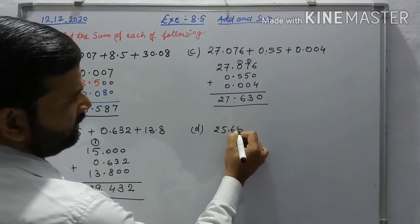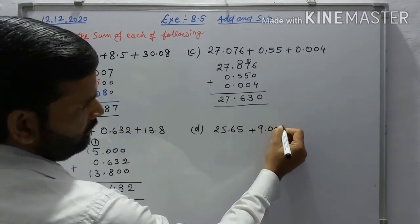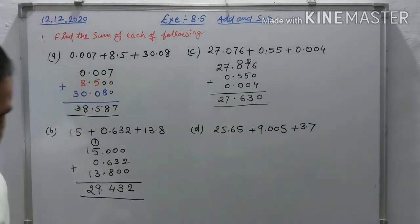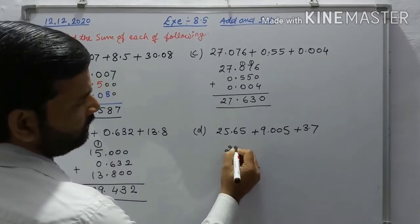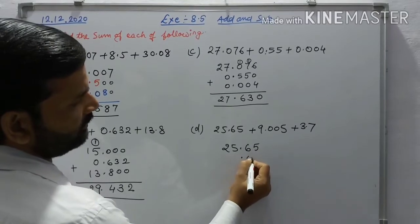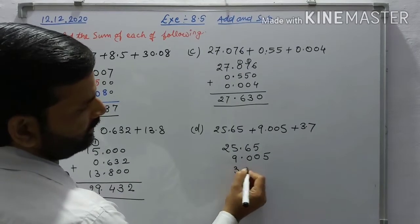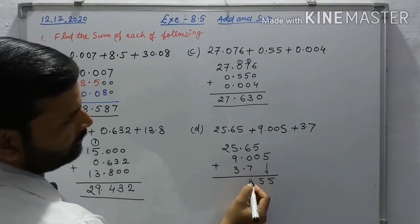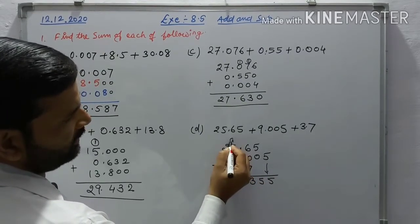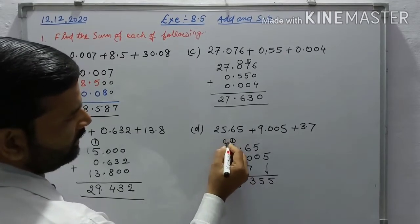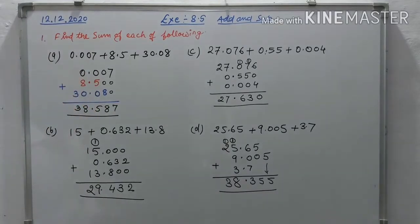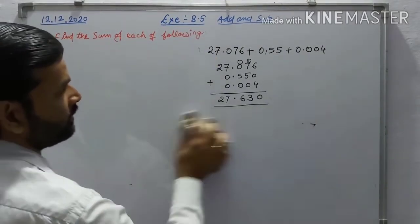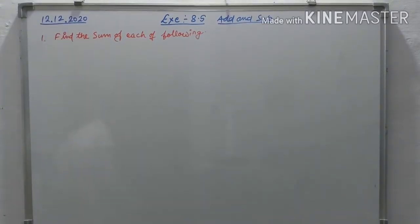Question (d) is 25.65 plus 9.005 plus 3.7. Write 25.650, then 9.005, then 3.700 and add. 5, 6 and 4 is 14 — carry 1 — 9, 1, 10 — carry — the answer is 38.355.